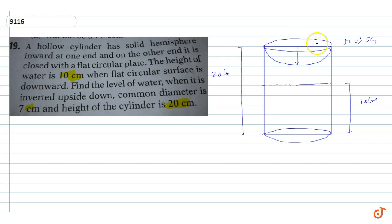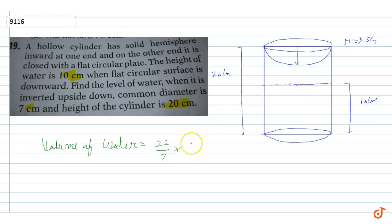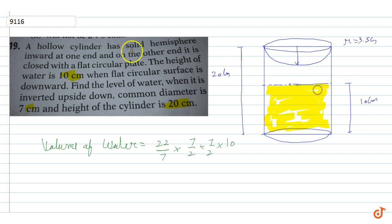The spherical part is at the upper side. Water only touches this area, and the height is 10 cm. So the volume of water is equal to π r² h = (22/7) × (7/2)² × 10. Simplifying: 7 cancels with 7, giving 77 × 5, which is equal to 385 cm³.